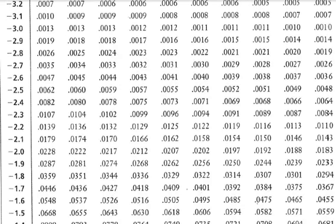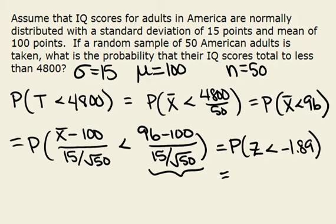And so when we go to negative 1.8 on the side, we get this probability of .0294. So we find that the probability that the total IQ score for the 50 people is less than 4800 is .0294.